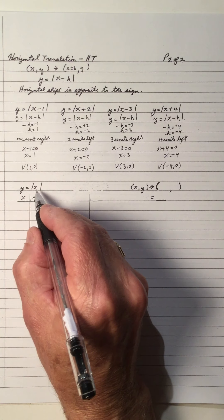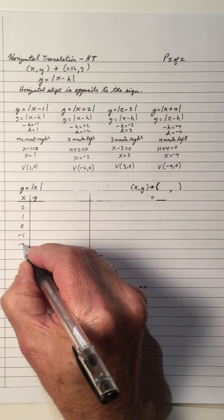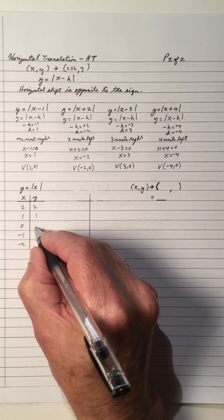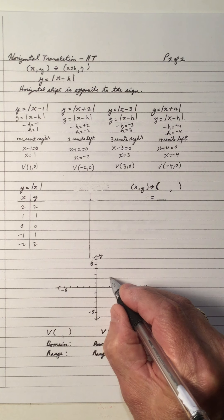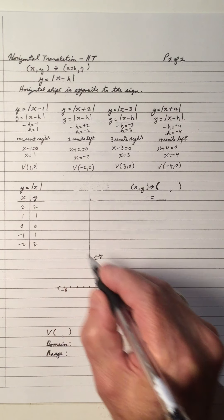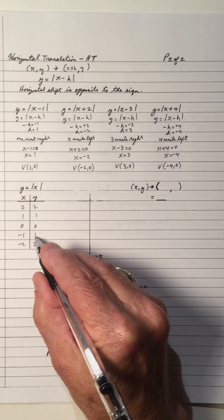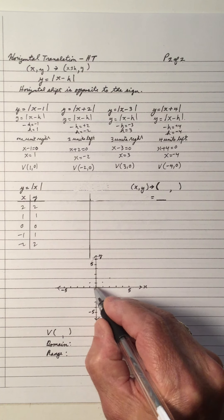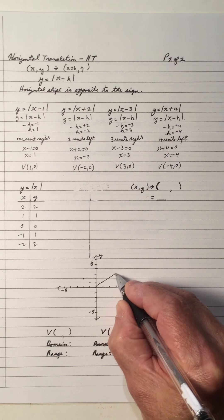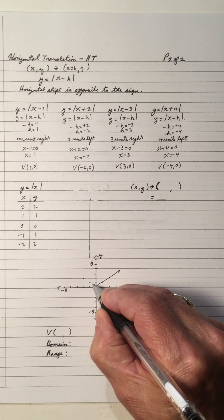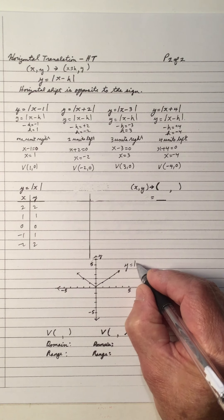Now we have the parent equation Y equals the absolute value of X. Using X values of 2, 1, 0, negative 1, and negative 2, we get Y values of 2, 1, 0, 1, and 2 respectively. Plotting these points: (2, 2), (1, 1), (0, 0), (negative 1, 1), (negative 2, 2). Drawing these freehand gives us the classic V-shape. That is Y equals the absolute value of X.